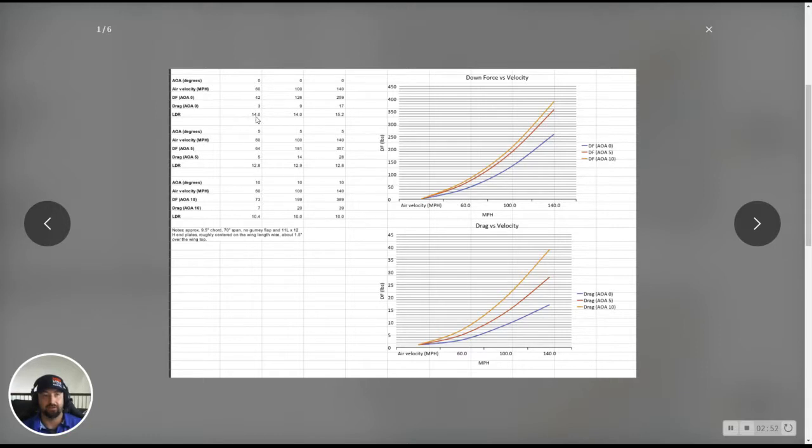So that's lift to drag ratio. On this chart, you see we have LDR, that's lift to drag ratio. And that's going to give you the ratios of all the wings at different speeds at different angles. Our best number we have is 15.2 to one. So that means 15.2 pounds of downforce per pound of drag, which is honestly one of the best in the industry. So that's the lift to drag ratio. That's what makes it good.